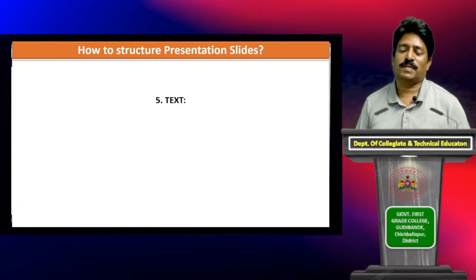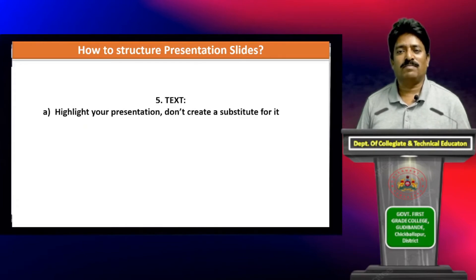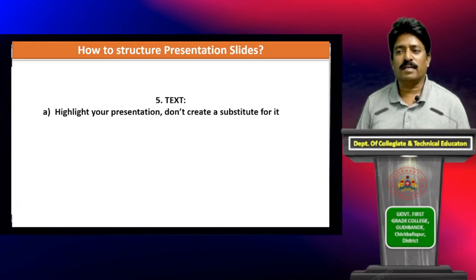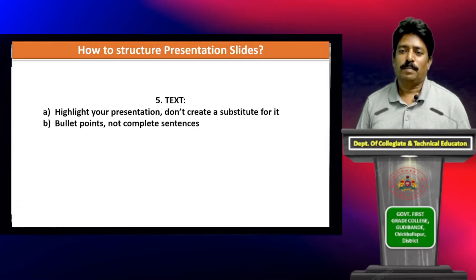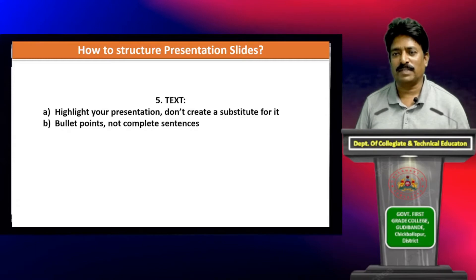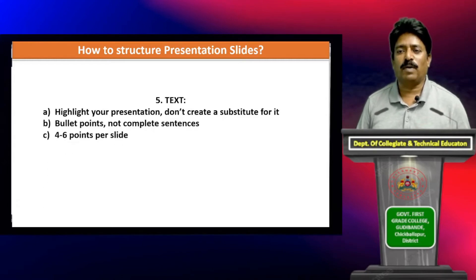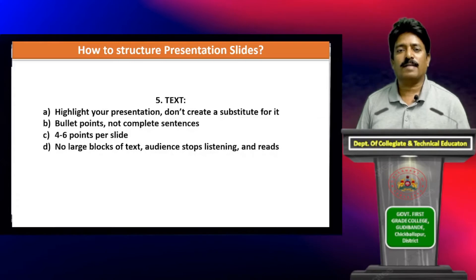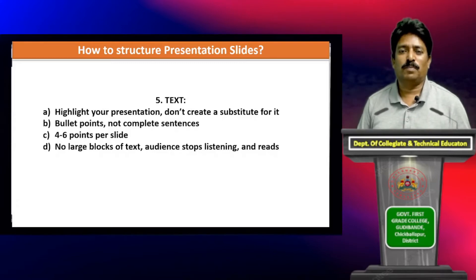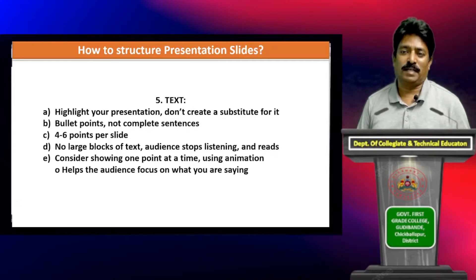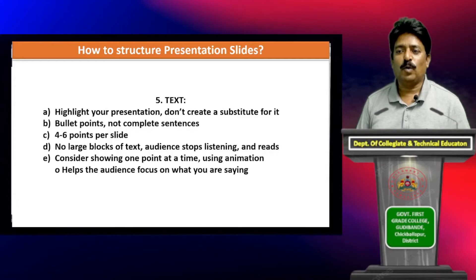Now let's come to the text of the presentation. The first thing to keep in mind when preparing text for PowerPoint: highlight your presentation, don't create a substitute for it. Bullet points are required, not complete sentences. Each slide may have four to six points — using more than that is not ideal. No large blocks of text, as the audience stops listening and reads them. Consider showing one point at a time using animation, as it helps the audience focus on what you are saying.